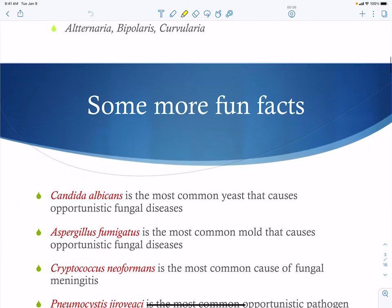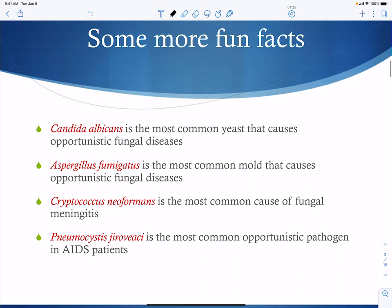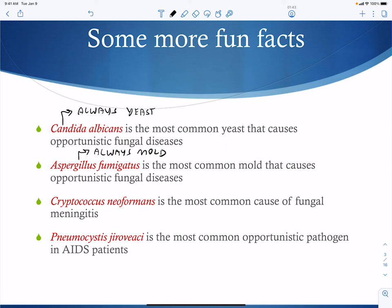Some key facts: Candida albicans is the most common yeast causing opportunistic fungal disease, and candida is also part of normal flora, which makes it very capable of being introduced into our bodies accidentally. Aspergillus fumigatus is the most common mold. Importantly, candida is always a yeast and aspergillus is always a mold — this is very different from the systemic mycoses, which showed thermal dimorphism, being yeast inside and mold outside.